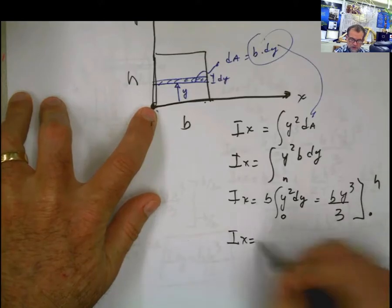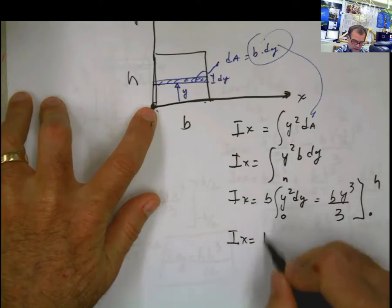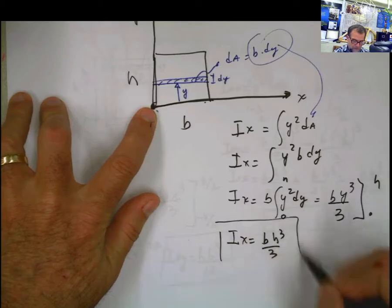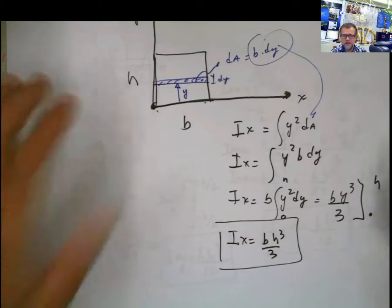The moment of inertia with respect to x is equal to b h cubed divided by 3. If you do it in the other direction, then you're going to get that I_y is equal to h b cubed divided by 3, which is the same thing. And you can repeat the procedure by yourself. You can do it. I hope you enjoy. See you next recording.